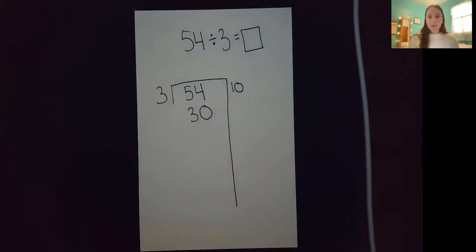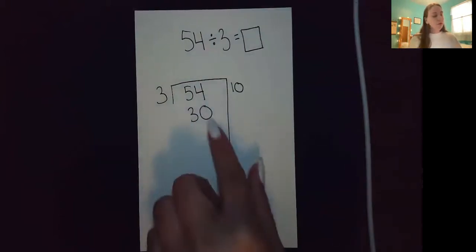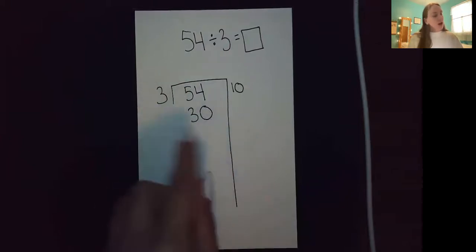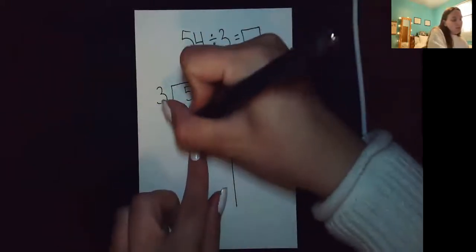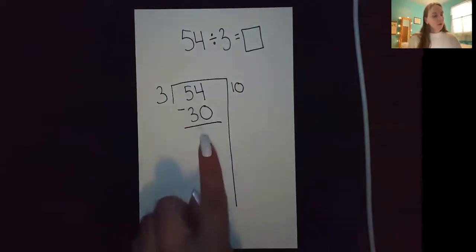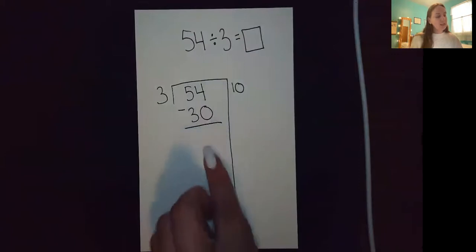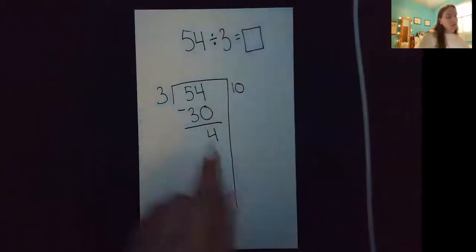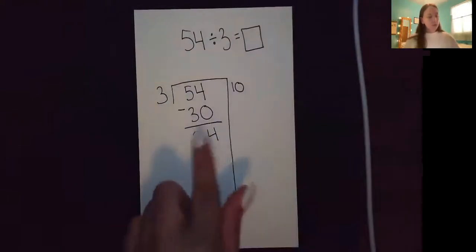And then the next step is to figure out how much I have left. So I've already accounted for 30. So to find how much is left, I'll find the difference by subtracting. 54 minus 30. I know four minus zero is four. And I know five minus three is two. So I'm left with 24.